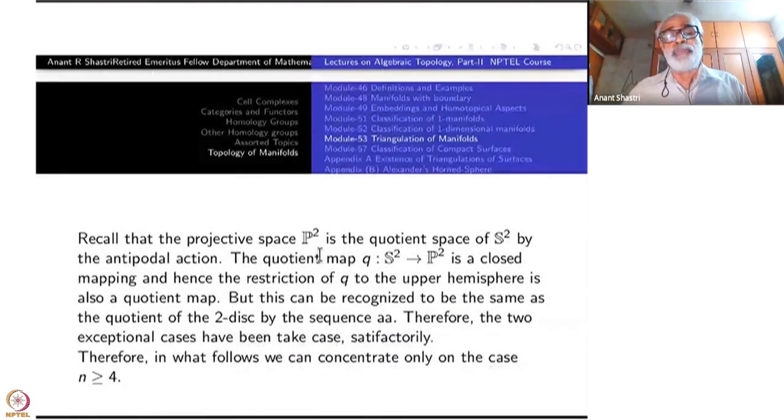When you have antipodal action on the disk, only on the boundary, we know that this is a projective space dimension 2. Recall that a projective space P2 is the quotient of S2 by the antipodal action. But you don't need the whole of S2. You can take only the upper half hemisphere. Then the identification is only on the equator. So that can be identified precisely as a flat disk and the boundary. And the sequence will be now A, A. So A, A represents projective space. A, A inverse represents sphere. So we have started classification. In the simplest case, we have finished the classification.